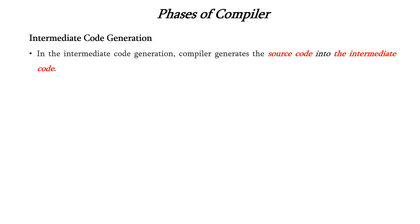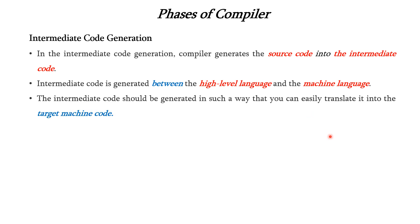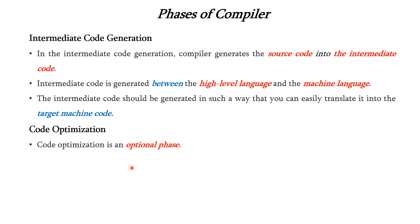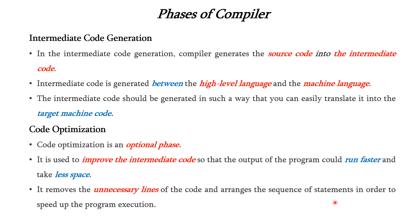The next phase is intermediate code generation. It generates the intermediate code from the source code. This code is generated between the high level language and the machine language, and it should be generated in such a way that it can be easily translated into the target machine code. The next phase is code optimization, which is an optional phase. It is used to improve the intermediate code so that the output of the program could run even faster and take less space. It removes the unnecessary lines of code and arranges the sequence of statements in order so that it can speed up the execution of the program.